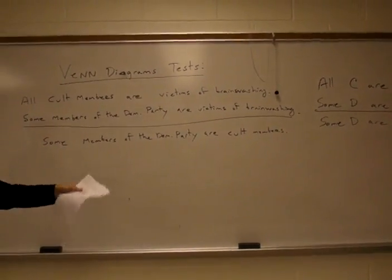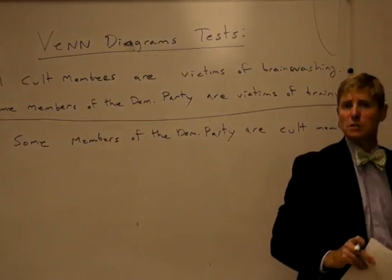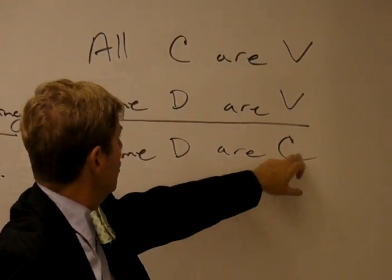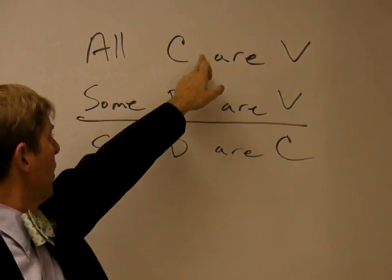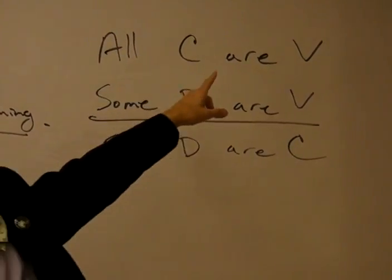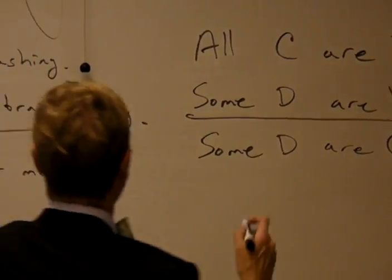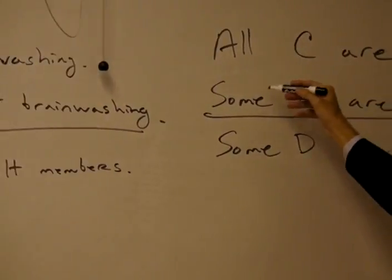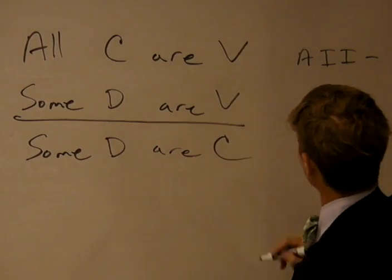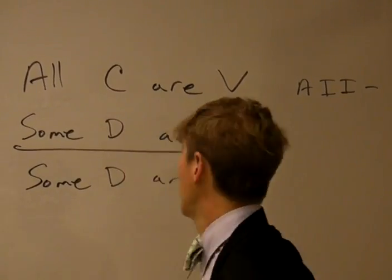Now, you'll notice that this is a standard form categorical syllogism. We have three terms, each used twice, but not in the same premise. Our major term, our major premise is where it ought to be, and our minor term, our minor premise is where it ought to be, and we also have our middle term. Now, the mood and figure of this one are A-I-I, and where the middle term is the predicate of both major and minor premise, we have figure two.